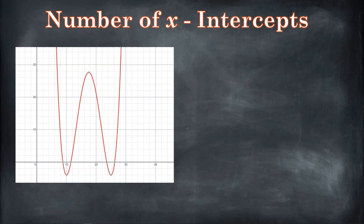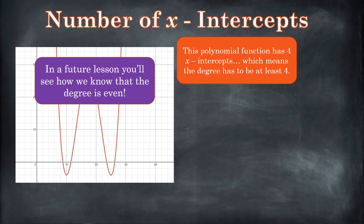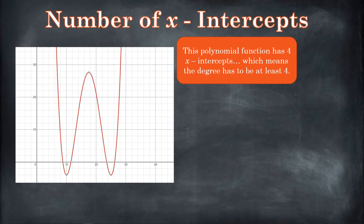Let's take a look at this graph. This polynomial has four x-intercepts. So that means it couldn't have a degree of one, two, or three — there are four intercepts. The smallest degree this could have is four. In the future we're going to learn more about this, like how we know the degree is going to be even. But for now, we know it's at least four.